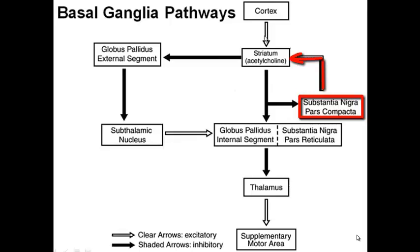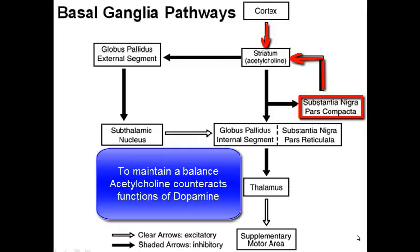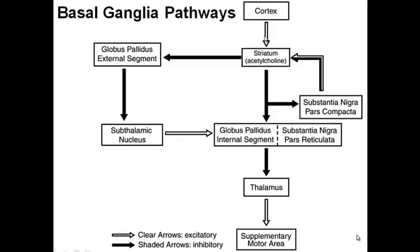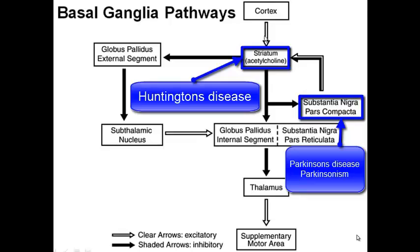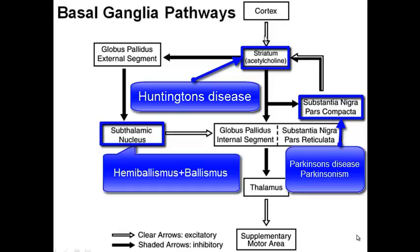At the same time, the striatum also receives acetylcholine from the cortex, which works the opposite way of dopamine — it enhances the indirect pathway and inhibits the direct pathway. This balance between dopamine and acetylcholine is very important when we talk about Parkinson's. With the basics of basal ganglia reviewed, let's remember three nuclei associated with the three conditions: substantia nigra is associated with Parkinson's, striatum with Huntington's disease, and the subthalamic nucleus with hemiballismus.